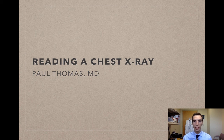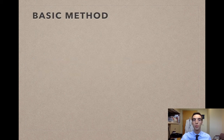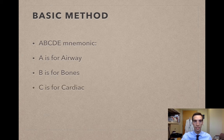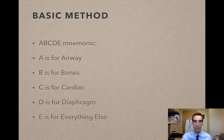Today I wanted to talk about reading a chest x-ray. There's a simple method that I use — the ABCDE mnemonic. A is for airway, B is for bones, C is for cardiac, D is for diaphragm, and E is for everything else.